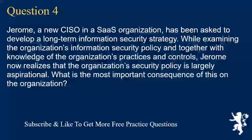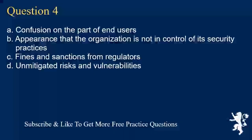Question 4. Jerome, a new CISO in a SaaS organization, has been asked to develop a long-term information security strategy. While examining the organization's information security policy, and together with knowledge of the organization's practices and controls, Jerome now realizes that the organization's security policy is largely aspirational. What is the most important consequence of this on the organization? A. Confusion on the part of end users. B. Appearance that the organization is not in control of its security practices. C. Fines and sanctions from regulators. D. Unmitigated risks and vulnerabilities.